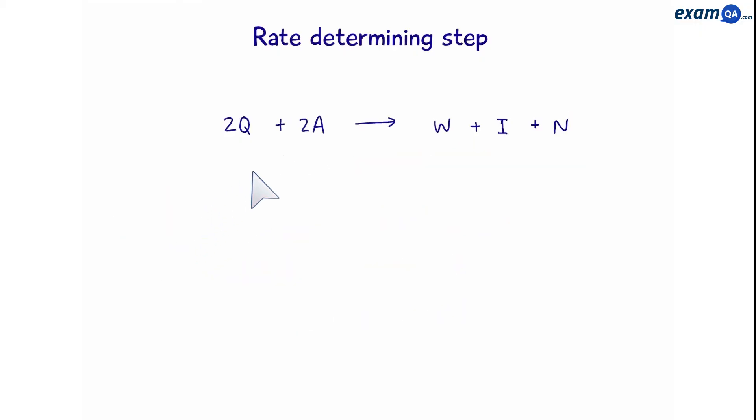Let's try another one. Here's a different type of question you might be asked. So, here we have a reaction. Step 1, two Qs join together to make R. R plus A makes I plus Z. And Z plus A makes N plus W. Our rate equation is the following.